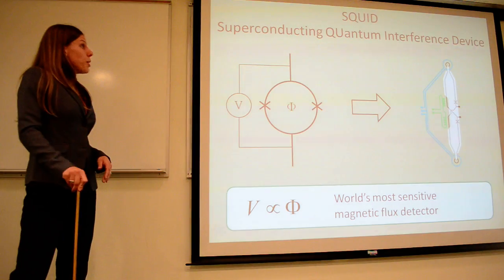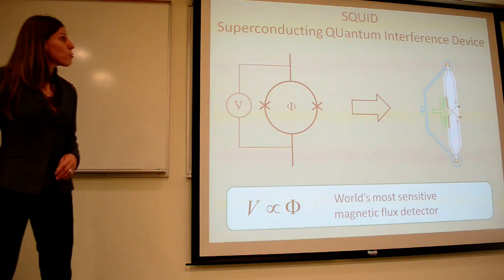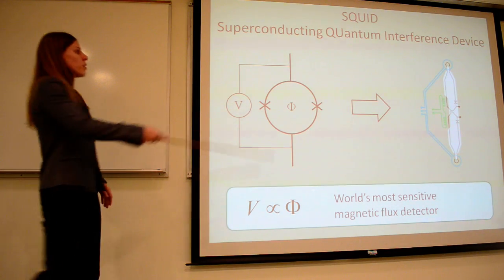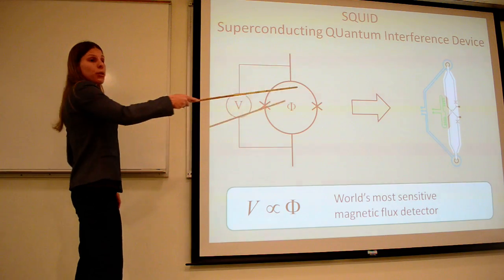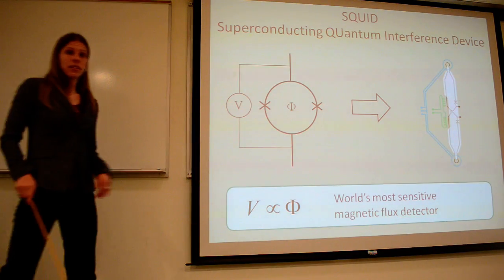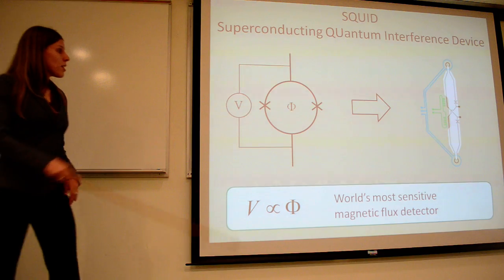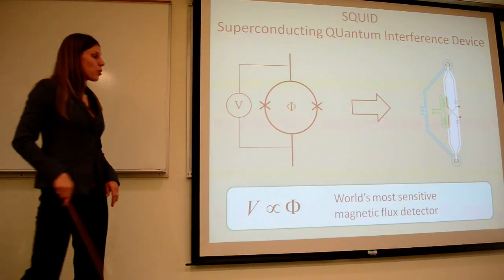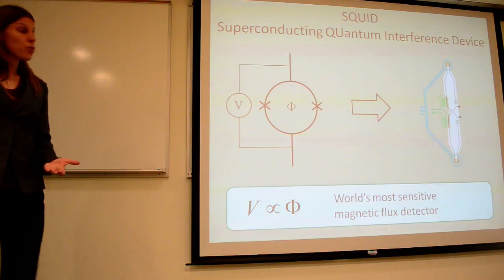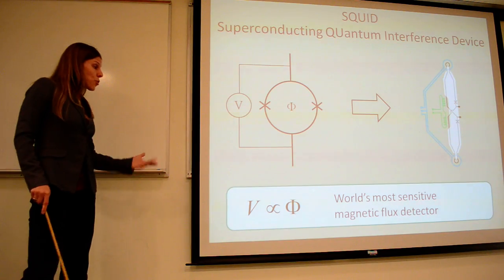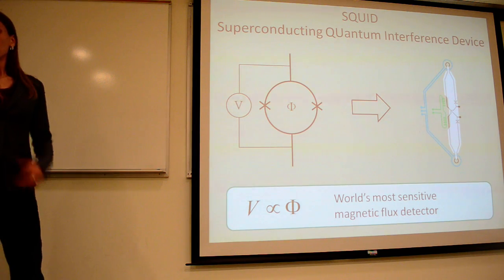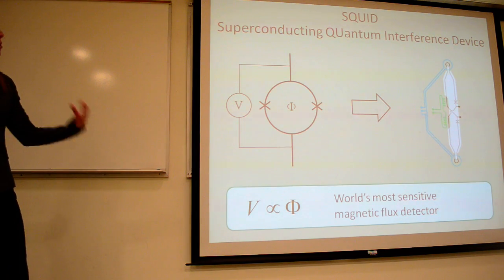So then what is a squid? A squid is a superconducting quantum interference device. At its most simple, it's just a loop of superconductor with two weak links in it. And in this case, the flux that passes through the loop is proportional to the voltage across it. So it's a flux voltage transducer, and you can engineer squids to be the world's most sensitive magnetic flux detectors. Now we've taken our squid design a couple steps further.